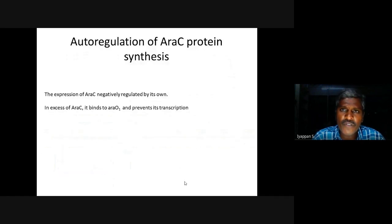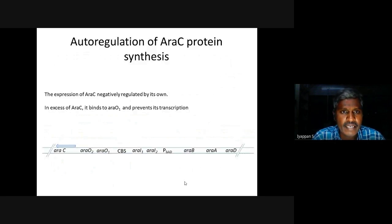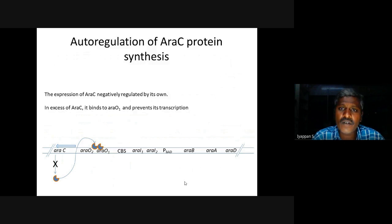Auto-regulation of RA-C protein synthesis: the expression of RA-C is negatively regulated by its own product. In excess of RA-C protein, it binds to RA-O1 and prevents its own transcription and translation for the synthesis of RA-C protein.